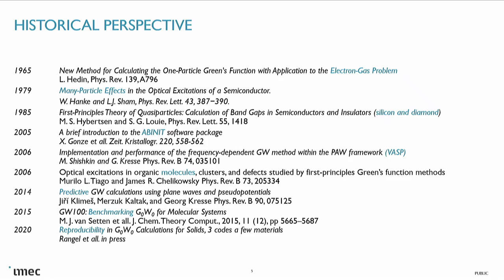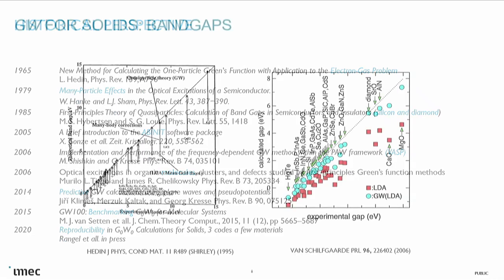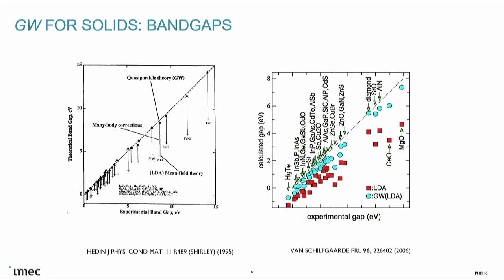At that point we thought this might be a problem. We started to do the GW100 set. At least for small systems we did a big review, hopefully answering quite a few of the questions from the recent lectures. And now we have arrived at a paper — almost published — where we do systematic reproducibility: making sure that if three different codes try to do exactly the same thing — same basis set, same pseudopotential, same ground-state DFT calculation, same type of GW — do we actually manage to get the same results? All of this is very important if we want to go to high throughput.